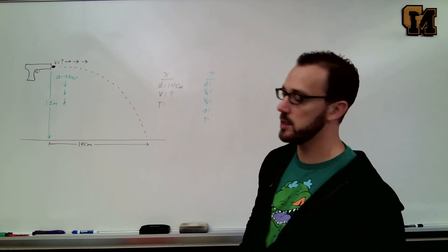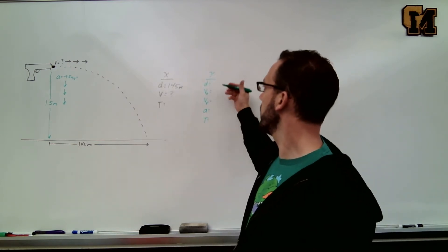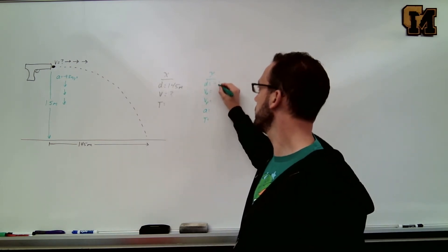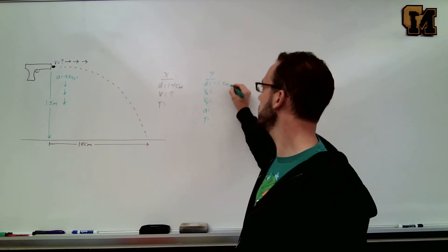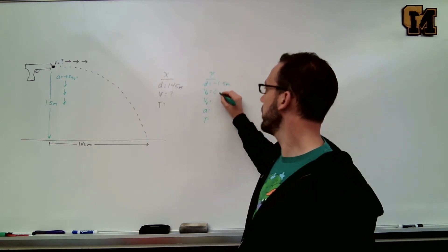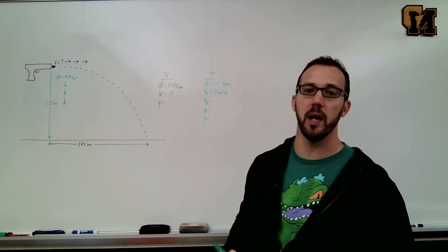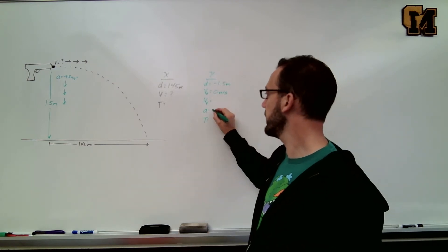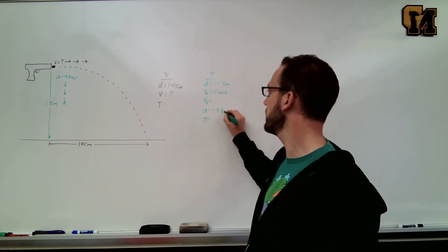In the y direction, we know our y displacement is down, so negative 1.5 meters. It's being fired horizontally, so it's got no initial y velocity. The acceleration is negative 9.8 meters per second squared.